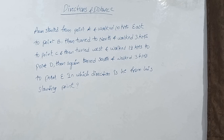Arun started from point A and walked 10 kilometers east to point B. Then turned north and walked 3 kilometers to point C. Then turned west and walked 12 kilometers to point D. Then again turned south and walked 3 kilometers to point E. In which direction is he facing? In which direction from his starting point?